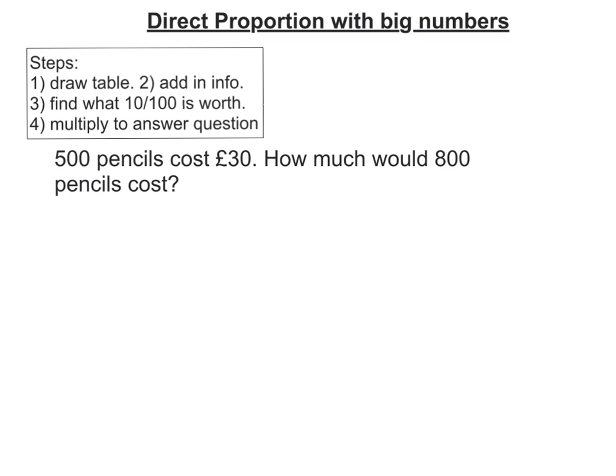In this video we're going to look at direct proportion where we have big numbers. In this case it might not be worthwhile to find out what one is worth — maybe 10 or 100 would just be adequate. First question: 500 pencils cost £30, how much would 800 pencils cost?